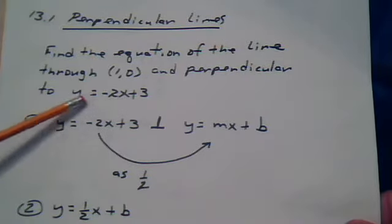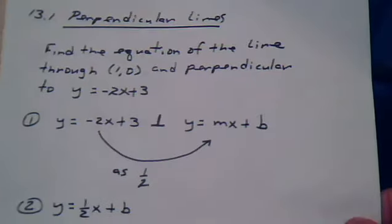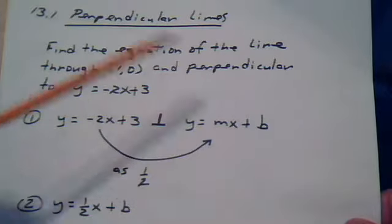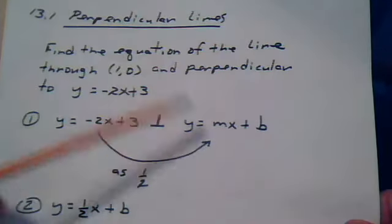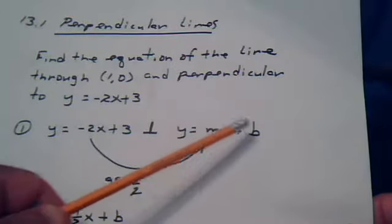So they give us a line and we're supposed to come up with another line. So notice we write y equals mx plus b. That's like the framework for the other line. We just need to find the m and the b.